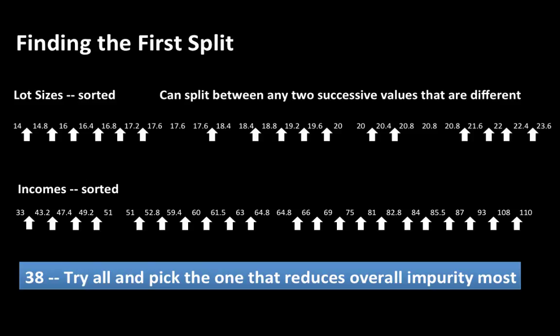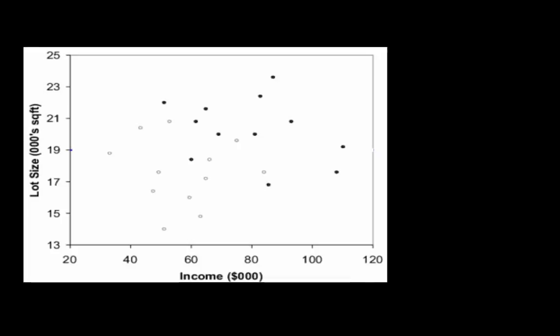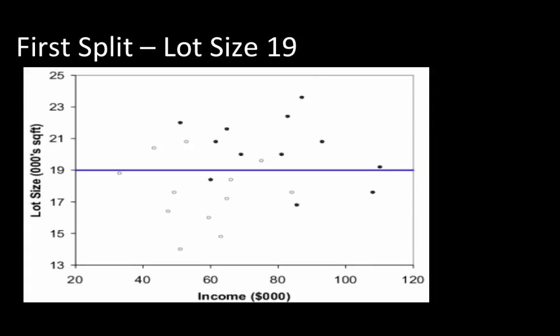We try out all 38 possibilities and pick the one that reduces overall impurity the most, since we want nodes to be as pure as possible. We take a greedy approach — choose the partition that improves purity the most. When the algorithm is run, it finds the first split at lot size 19: values greater than or equal to 19 go in one set, and less than 19 go in the other.